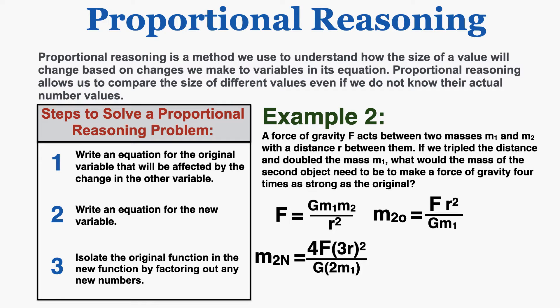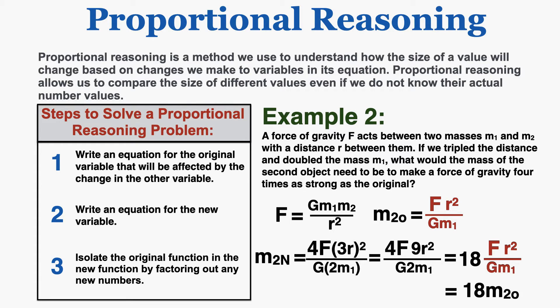The final step is to isolate the original function in the new function by factoring out any new numbers. When I square the 3, I get 9r squared. Multiplying 4 times 9 and dividing by 2 gives 18. So I have 18 times F times r squared over G times m1. That right part of the equation equals the original second mass, so the new mass is equal to 18 times the original mass.